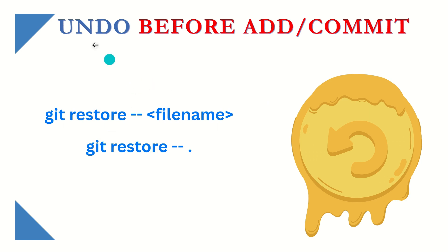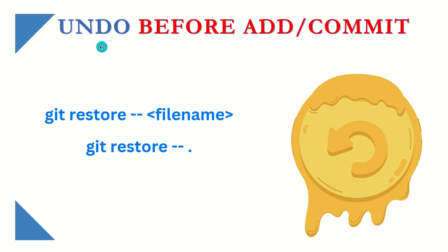We can make different types of mistakes. For example: what if we want to undo our code before we have run git add and commit? What if we want to undo after git add but not commit? Or what if we want to undo after both adding and committing? We'll see all these scenarios one by one.